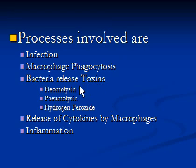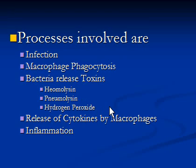Bacteria damage host cells by releasing toxins. Hemolysin is a toxin produced and released by some bacteria including Streptococcus pneumoniae, which damages red blood cells to release hemoglobin used by bacteria as a nutrient. Nemolysin is another toxin that creates holes in host cells to release their contents, also used by bacteria as food. Hydrogen peroxide is another toxin released by Streptococcus pneumoniae that damages the surrounding tissue.